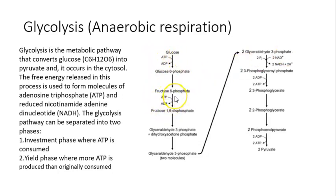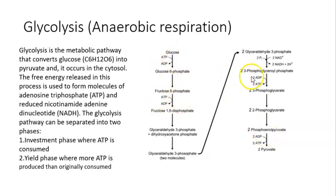In the yield phase, more ATP is produced than originally consumed. Two ATPs consumed in the investment phase are cancelled out by two ATPs produced, so at the end of glycolysis we produce a net of two molecules of ATP, two pyruvate, and two NADH.